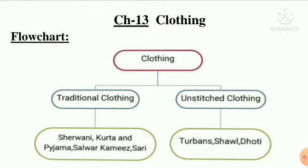Draw this flowchart about clothing. There are two types of clothing: traditional clothing and unstitched clothing. Traditional clothing includes sherwani, kurta and pyjama, salwar kameez, and saree. On the other hand, unstitched clothing includes turbans, shawl, and dhoti.